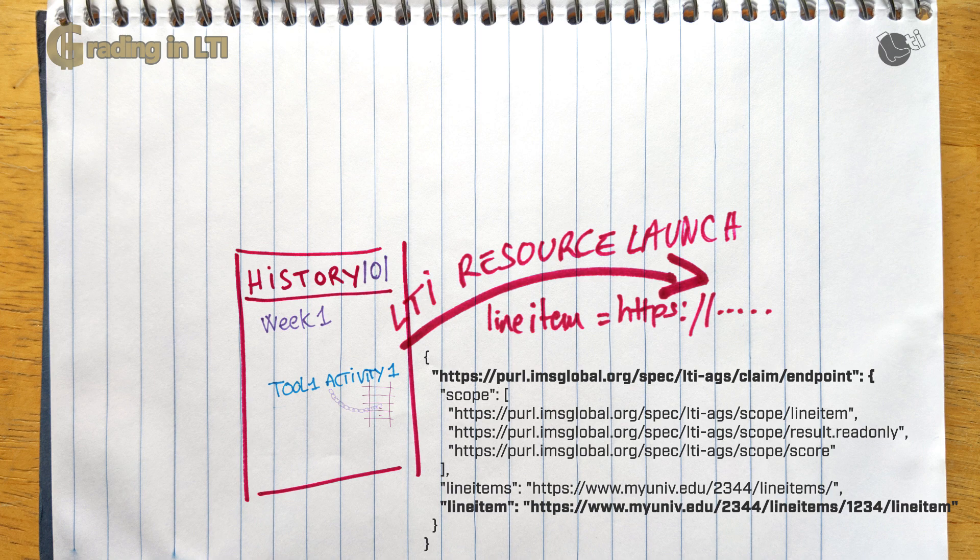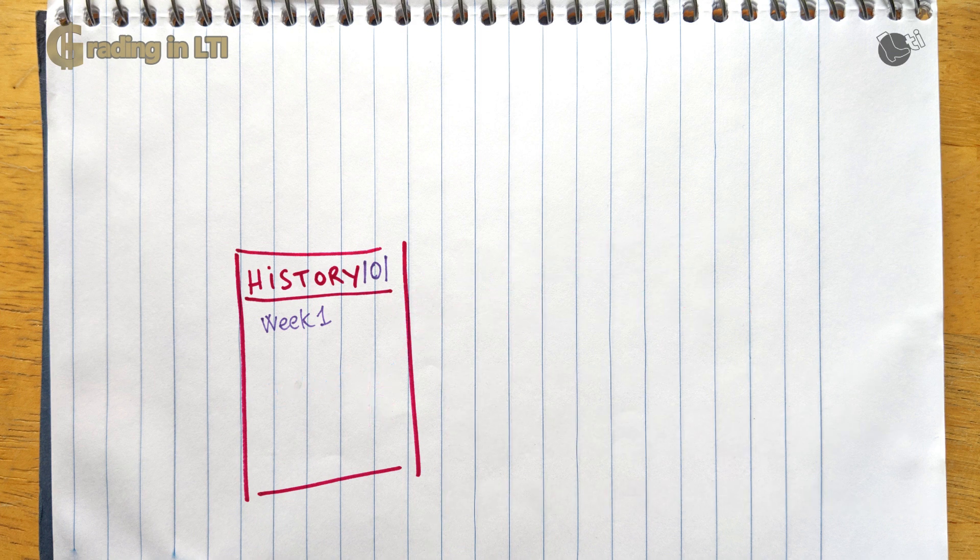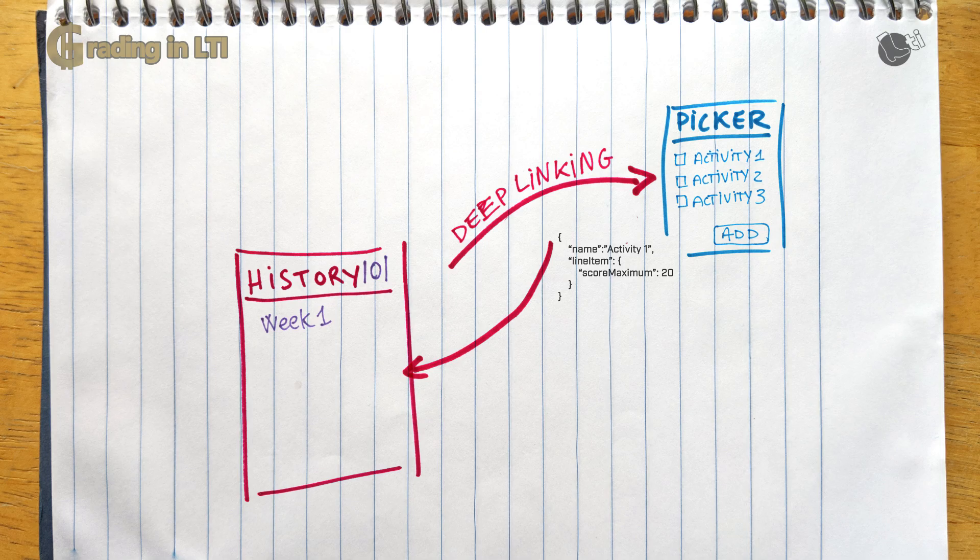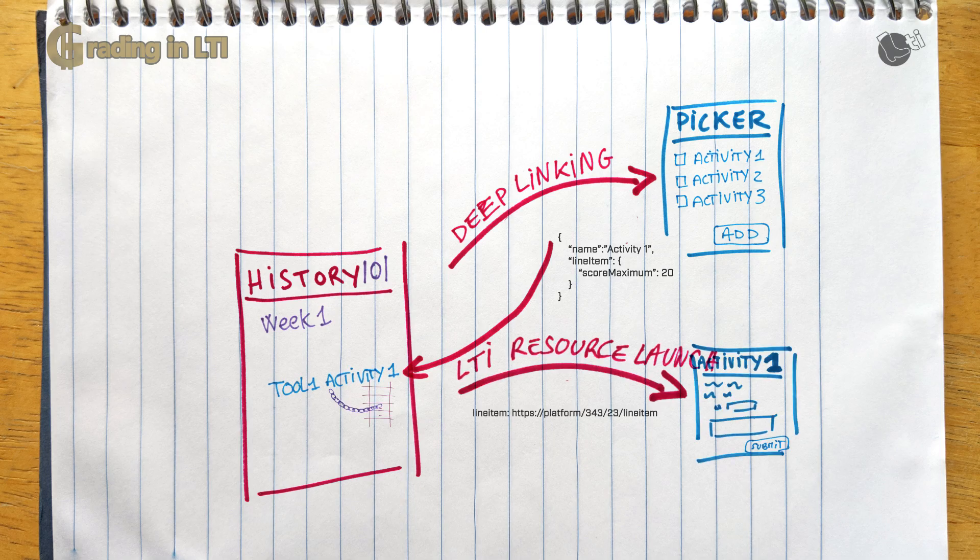So this allows a very simple flow, quite similar to the LTI 1.1 basic outcome. First, deep linking returns a graded LTI resource link definition and a link in the gradebook column is created by the platform. Then the student clicks on that link. The LTI message contains the URL where to post scores back for that activity once the student has completed it.